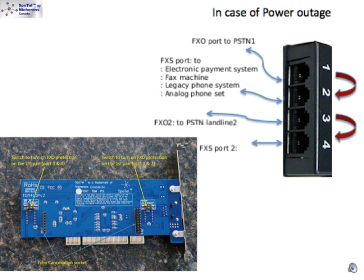FXO at port 1 and FXS at port 2 form the first protection pair, while FXO at port 3 and FXS at port 4 form the second pair. When the power is up, the FXO and FXS will work according to the outbound and inbound routes as configured at the PBX. For instance, the FXS phone could dial out from the VoIP phone line as well as the PSTN landline.